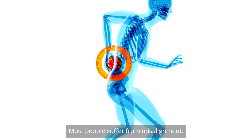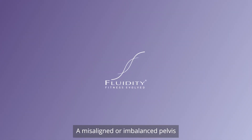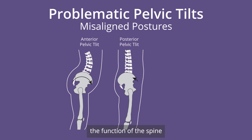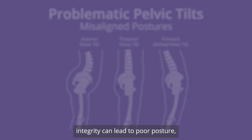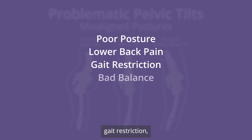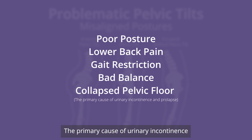Here are a few examples. A misaligned or imbalanced pelvis cannot adequately support the function of the spine and pelvic floor. This loss of spine and pelvic floor integrity can lead to poor posture, lower back pain, gait restriction, bad balance, and/or a collapsed pelvic floor — the primary cause of urinary incontinence and prolapse.